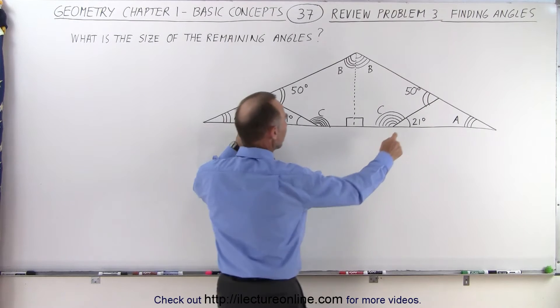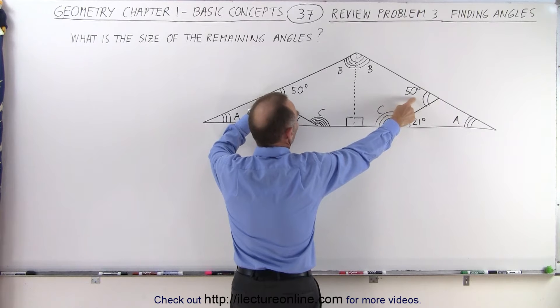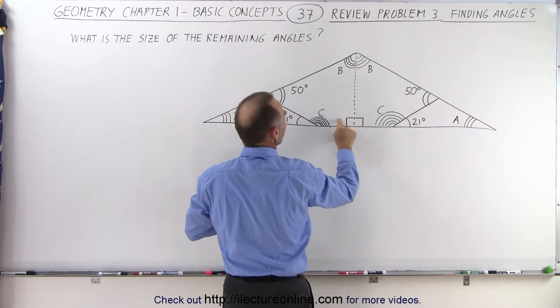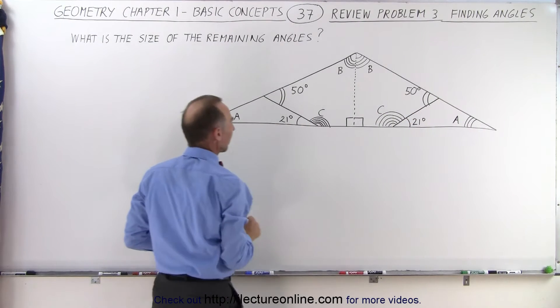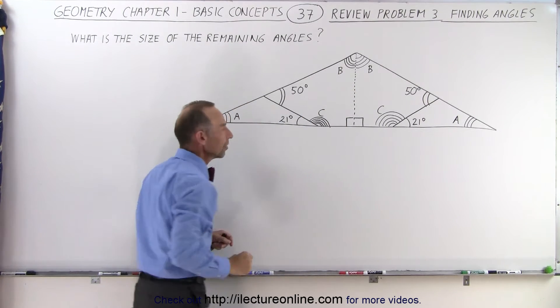We're told that these two angles are equal to one another at 21 degrees. These two angles are equal to one another at 50 degrees, and these are two right angles. Now they're asking us to find the value for angle A, the angle B, and the angle C.